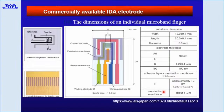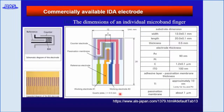This slide shows a commercially available IDA electrode from the ALS catalogue. The dimensions of the individual micro-fingers and available electrode materials are shown here. The reference, counter, and IDA electrode are all printed on one chip plate. Typical dimensions for individual microband fingers are several hundred nanometers in height, 10 micrometers in width, and 5 to 10 millimeters in length. The potential of each finger set of electrodes can be controlled individually.